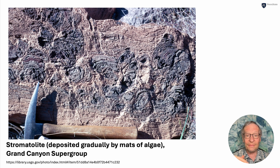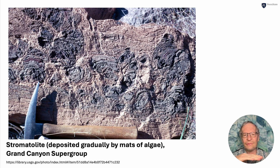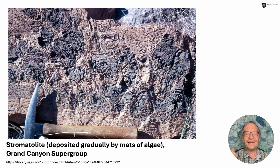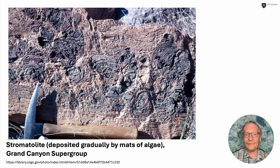This, for example, is a little tiny piece of that — this is a stromatolite. Algae would grow on a rock, mud washes in, the algae grow up through it, mud washes in again. Each of those little layers you see in this picture is roughly a day's worth of algae growing up and growing up and growing up.